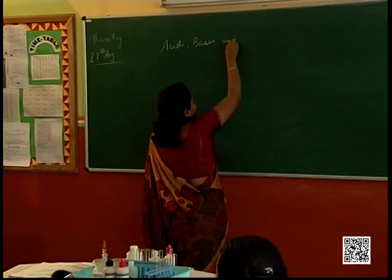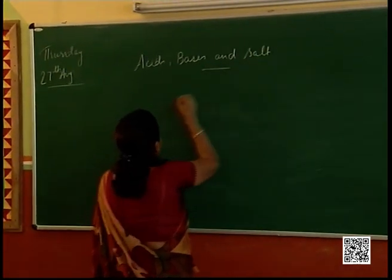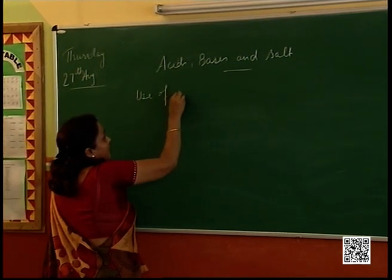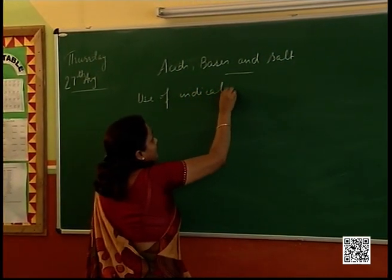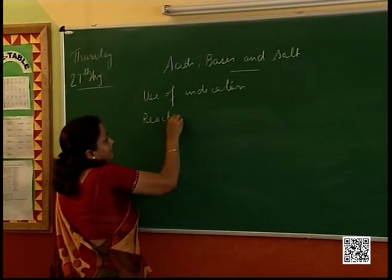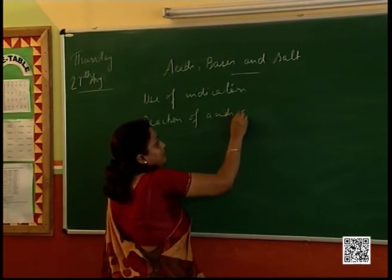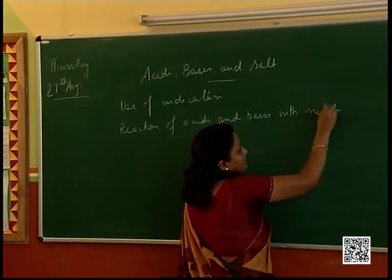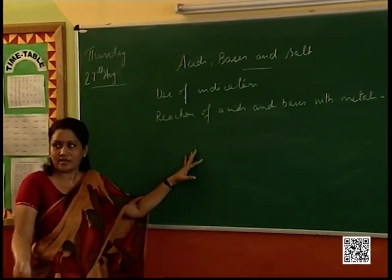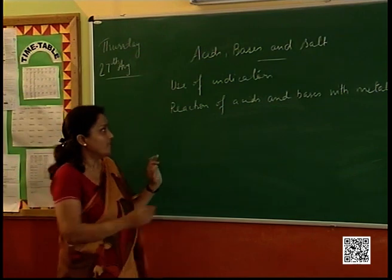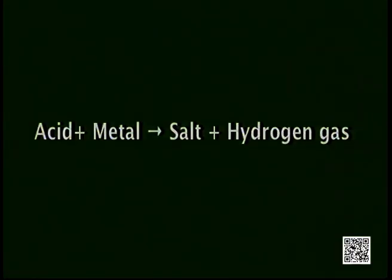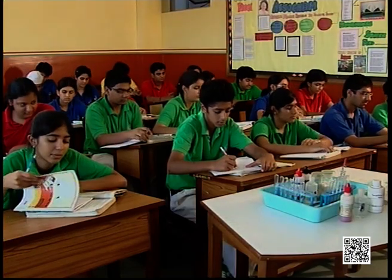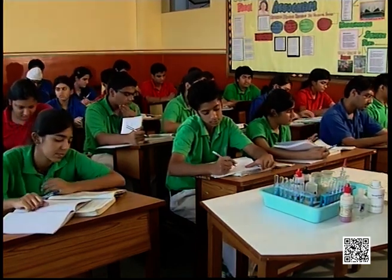One very important property of acids and bases is the reaction of acids and bases with metals. If I have to write a general chemical equation — we have done reactions in the first chapter — a metal reacting with an acid produces salt, and hydrogen gas is evolved. Please look in the book on page 20, where that equation is given: acid plus metal gives salt plus hydrogen gas.